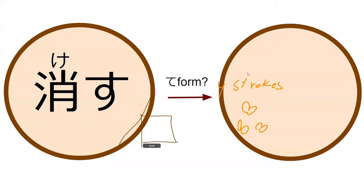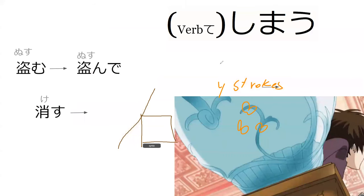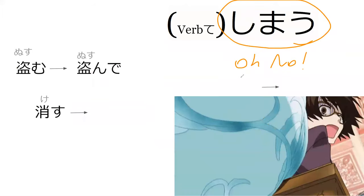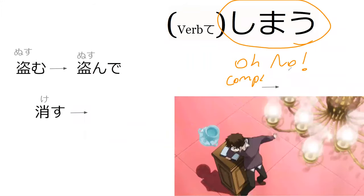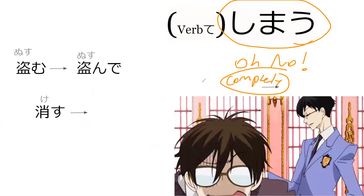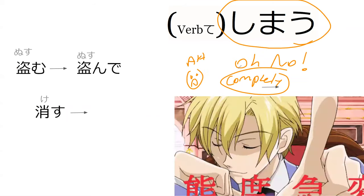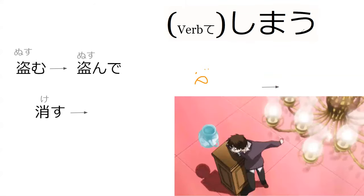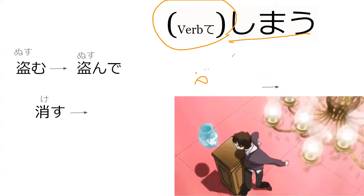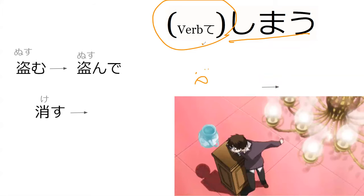しまう gives an 'oh no' kind of meaning to things in Japanese. Officially it means 'completely,' and it's just like in English when you say 'I've done it now' — it insinuates the action has occurred and there's an 'oh no' feeling. The way you add this meaning is by using て-form with しまう, just like we saw with できる. So for example, ぬすんでしまう means 'someone stole something' — like 'oh no, I stole it.'